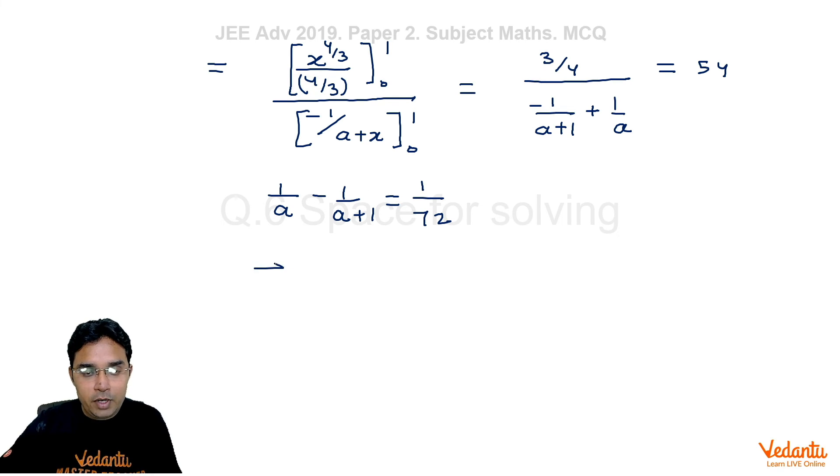Okay so if you take LCM we get 1 upon a into (a + 1) is equal to 1 upon 72 so a into (a + 1) is equal to 72. So this after solving a quadratic gives you two values either a equal to 8 or a equal to minus 9.